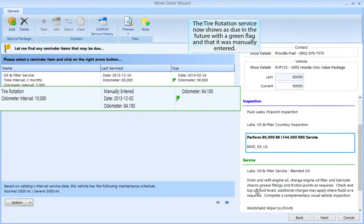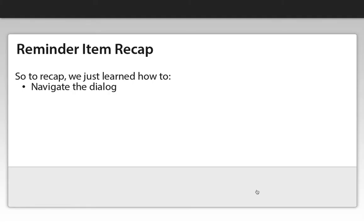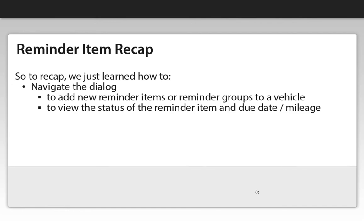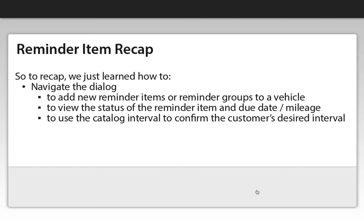Now click the OK button. The tire rotation service now shows as due in the future with a green flag and indicates it was manually entered. So to recap, we just learned how to navigate the dialog, to add new reminder items or reminder groups to a vehicle, to view the status of the reminder item by due date or mileage, to use the catalog interval to confirm the customer's desired interval, and to remedy a reminder item.